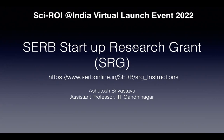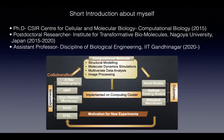Before we move on to talk about this particular grant, I would first like to introduce myself. I completed my PhD from CSIR Center for Cellular and Molecular Biology in Computational Biology in 2015. Thereafter, I moved to Japan to complete my postdoctoral research at the Institute for Transformative Biomolecules, Nagoya University. At the end of 2020, in December, I joined IIT Gandhi Nagar in the discipline of Biological Engineering as assistant professor.